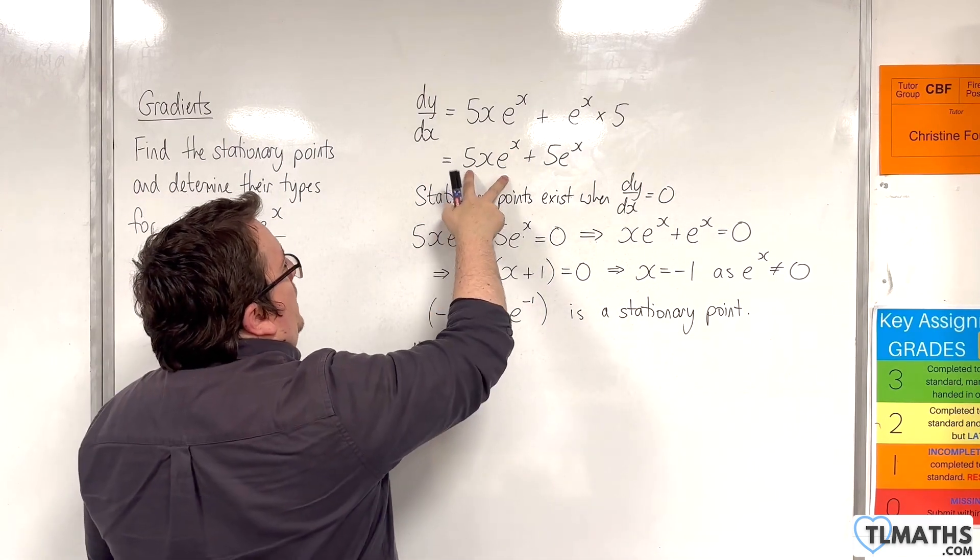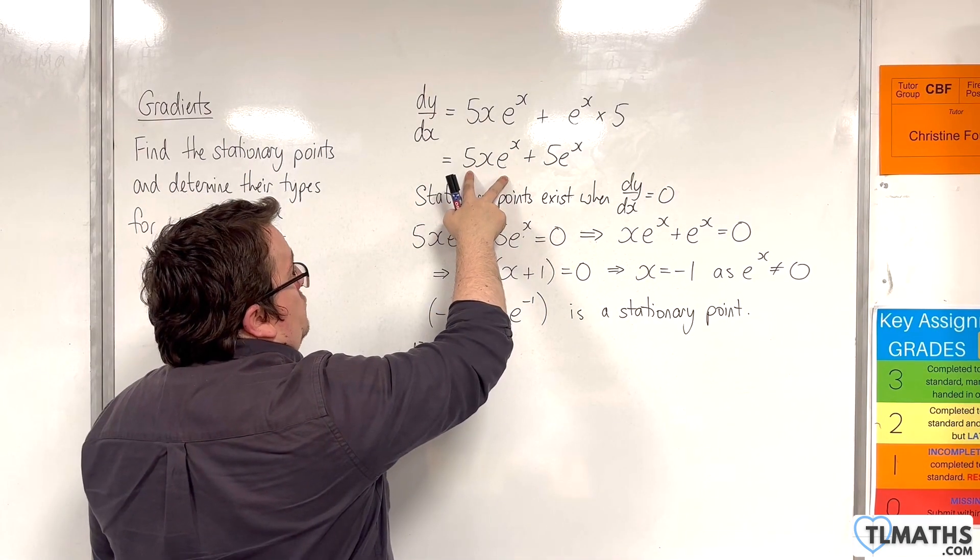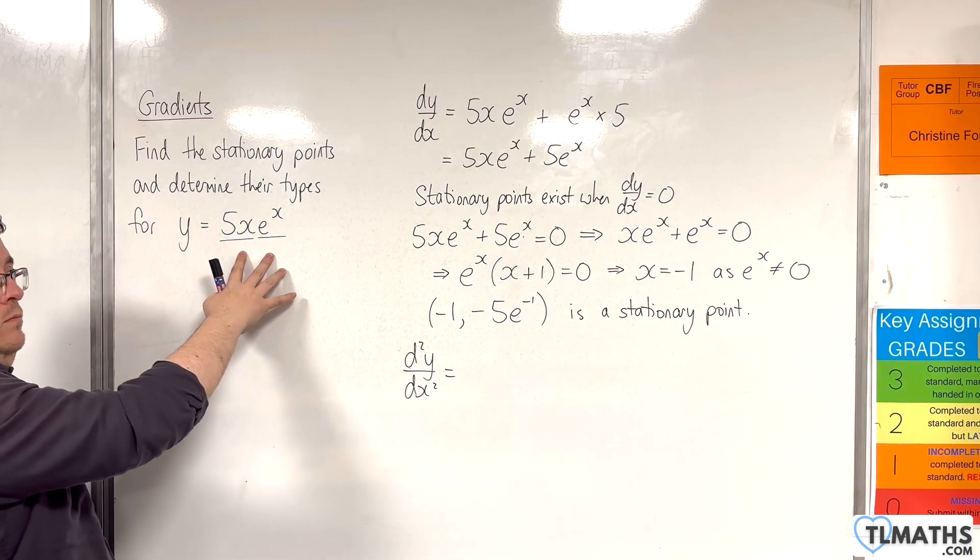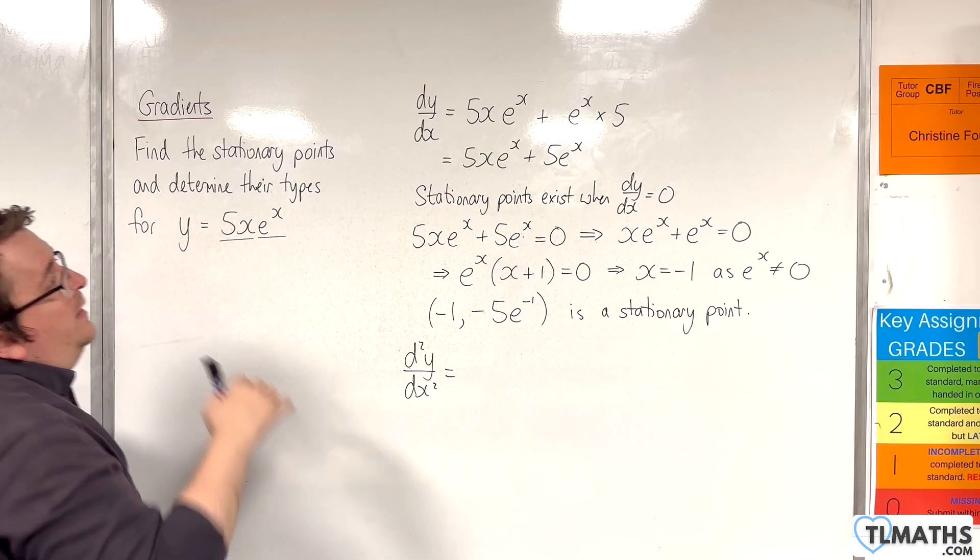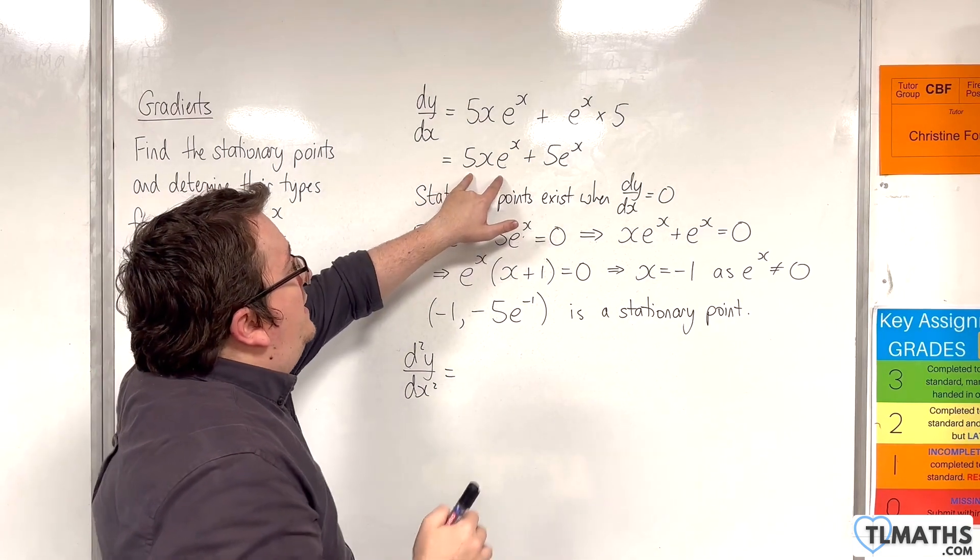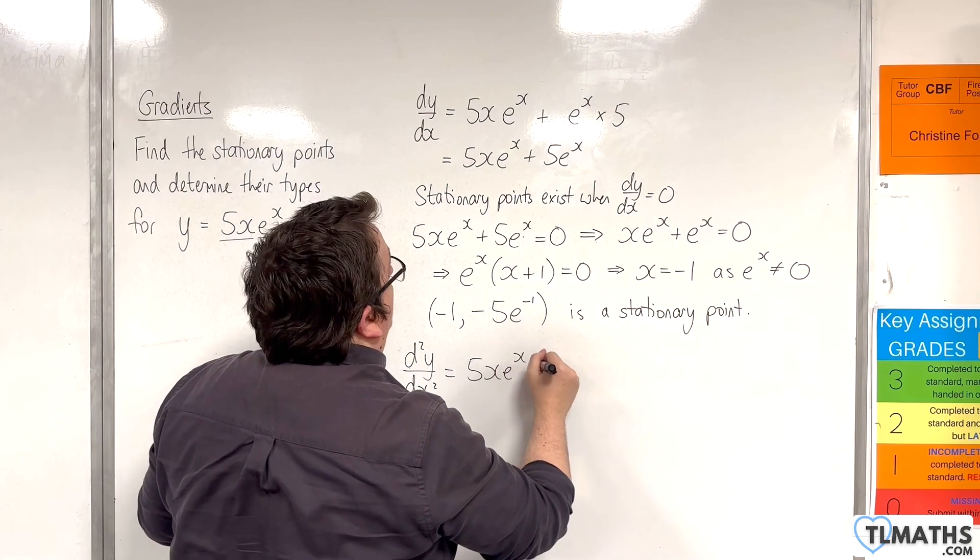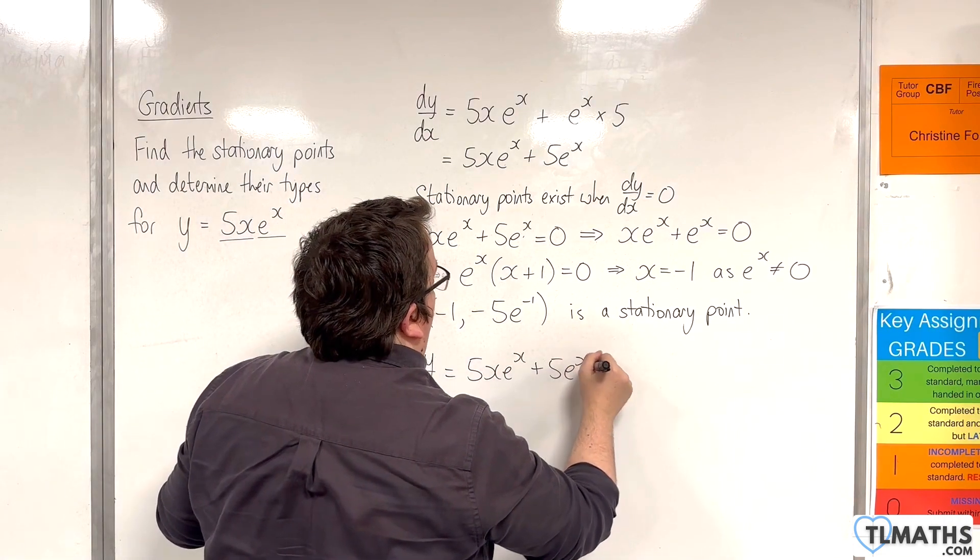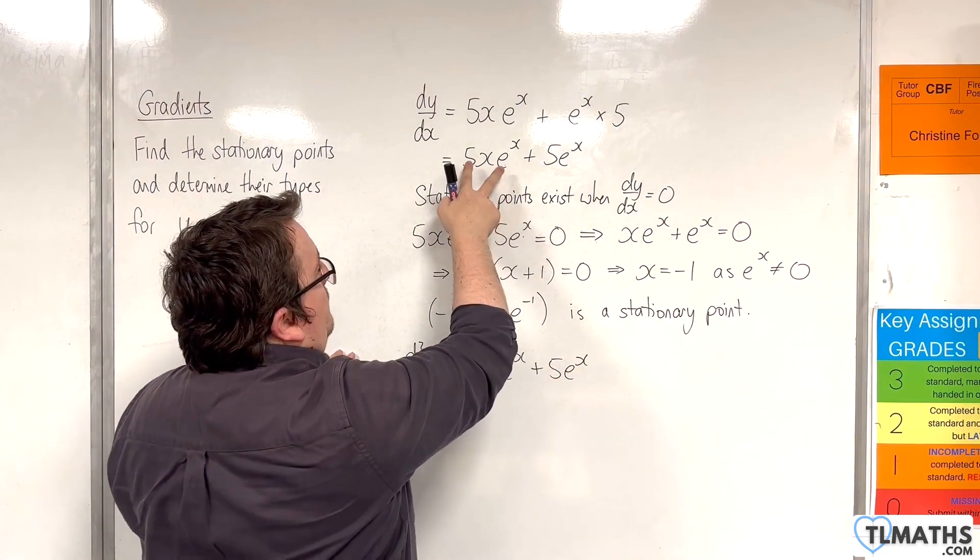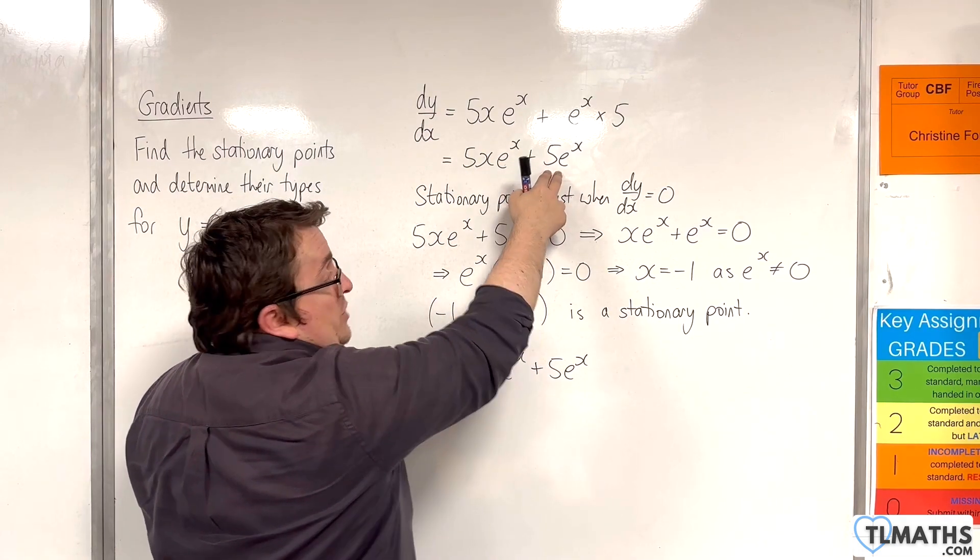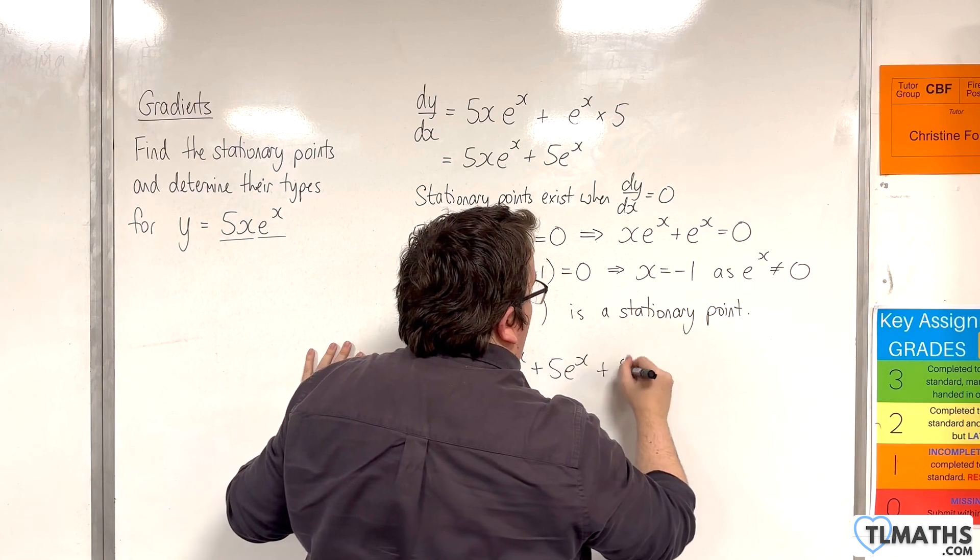This first part we're going to have to use the product rule. Remember that is precisely the same as the function we started with, so we know that 5x e to the x differentiates to that. We'd have 5x e to the x plus 5 e to the x. That is the derivative of that. And then we also have the plus 5 e to the x which differentiates to 5 e to the x.